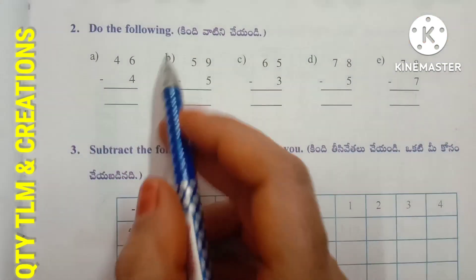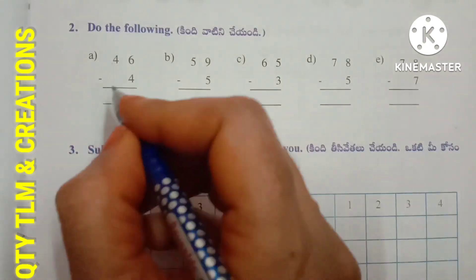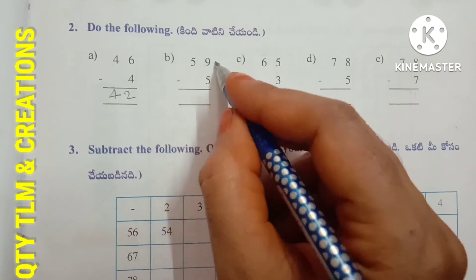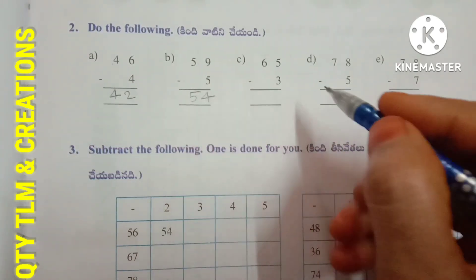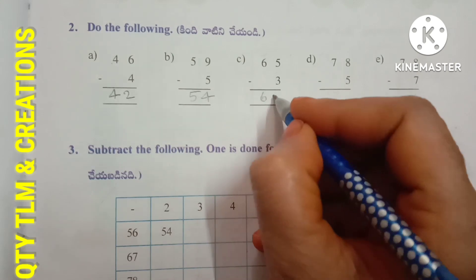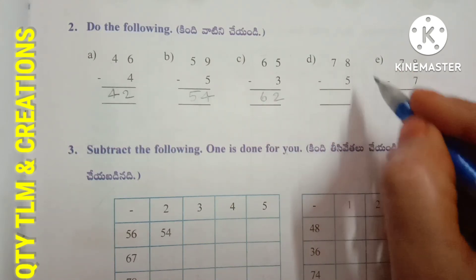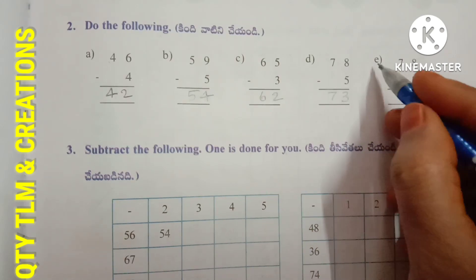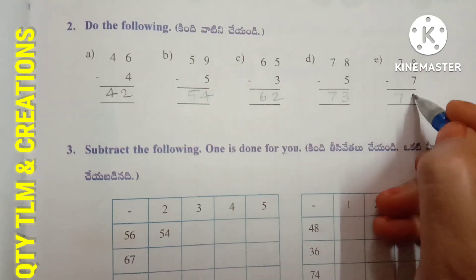Next: do the following. A) 46 minus 4 gives 42. B) 59 minus 5 gives 54. C) 65 minus 3 gives 62. D) 78 minus 5 gives 73. E) 78 minus 7 gives 71.